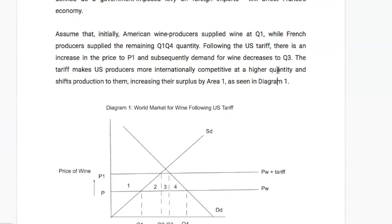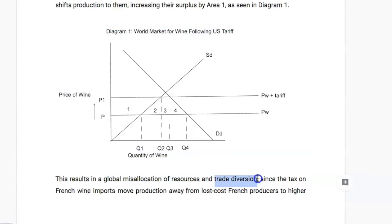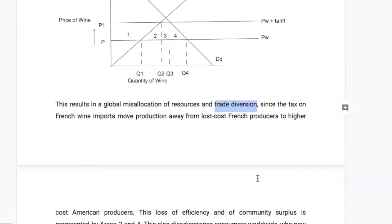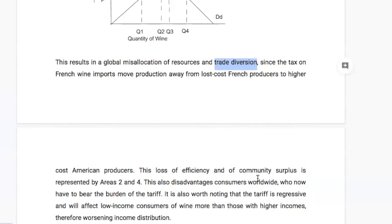The first thing to mention is that the tariff results in a global misallocation of resources and trade diversion — meaning production shifts from efficient French wine producers to inefficient American wine producers, because the tariff creates an artificial competitive advantage for American producers. This loss of efficiency results in a deadweight loss, or potential welfare loss, represented by areas 2 and 4 in diagram 1. These triangles represent the loss of efficiency from the tariff.